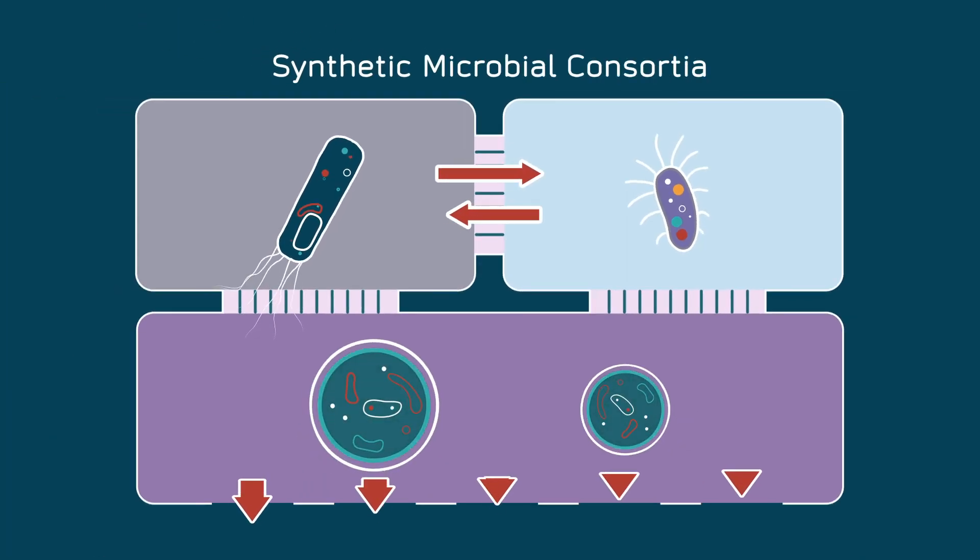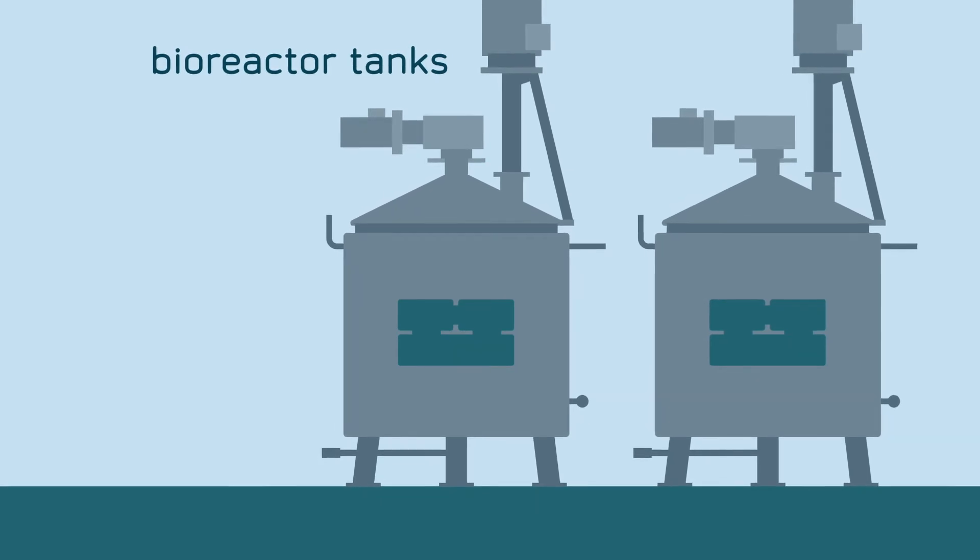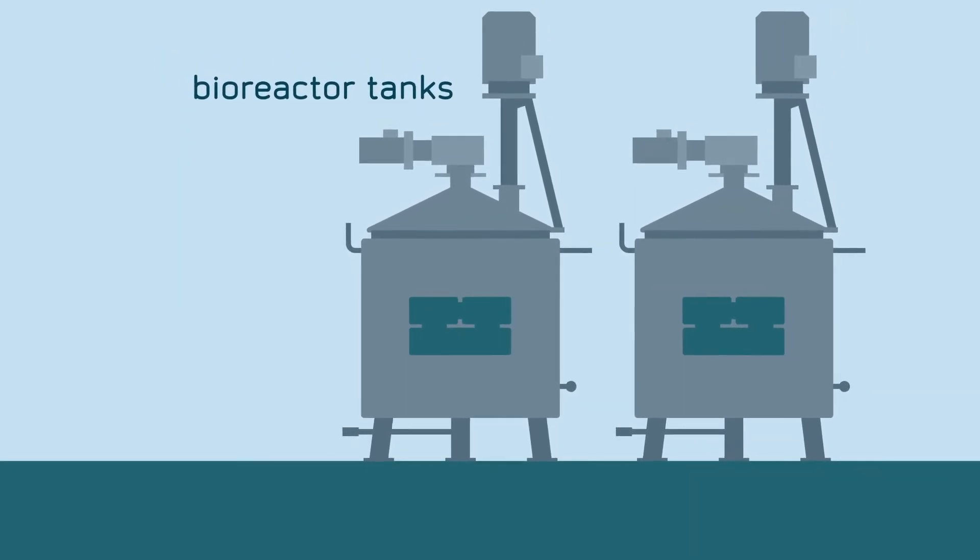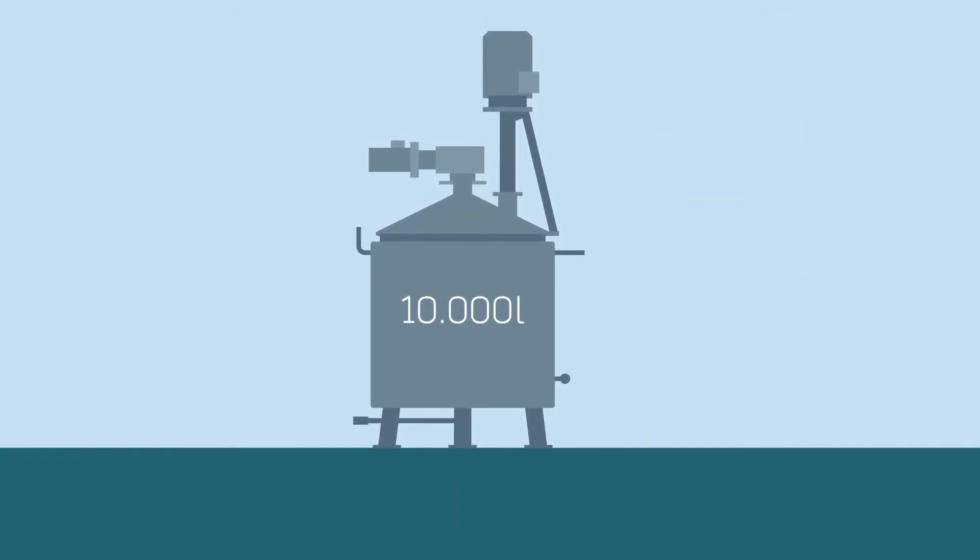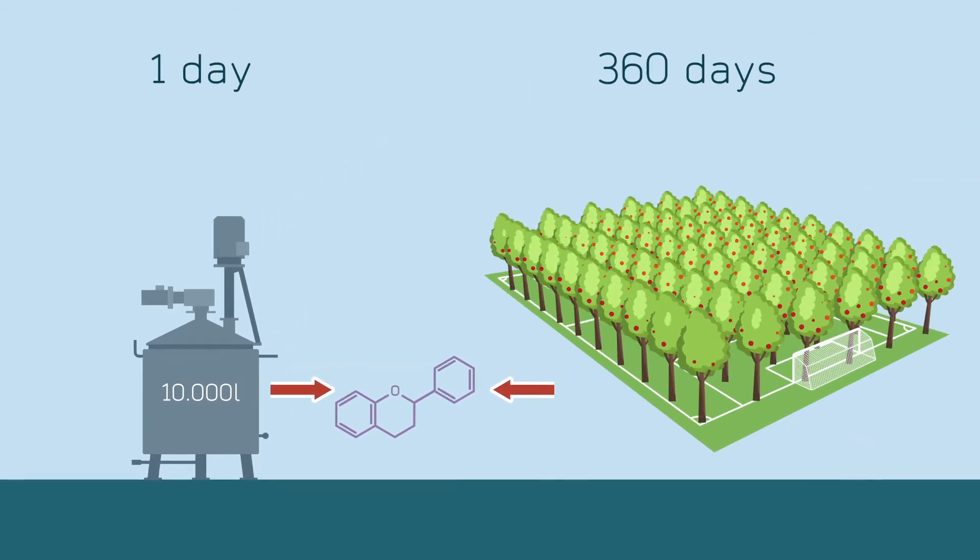These synthetic microbial consortia are cultivated in controlled environments in so-called bioreactor tanks. For instance, in a single day, the microbes in a 10,000 litre bioreactor could produce the same amount of flavonoids that an apple orchard the size of a football field produces in a year.